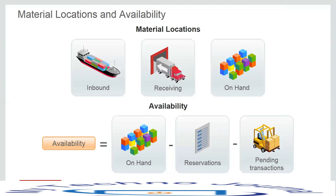This diagram depicts the manage item quantities user interface, which enables viewing inventory balances by material location. There are three separate material locations: on-hand, inbound, and receiving. On-hand inventory balances refer to material residing in storage locations within the warehouse, and inbound inventory balances refer to material actively being received or in transit, typically based on inbound documents such as a purchase order or advanced shipment notice.